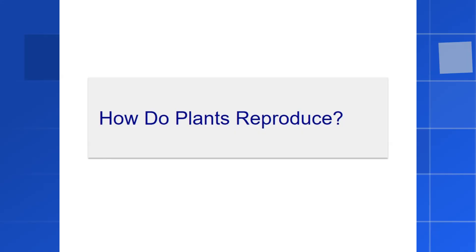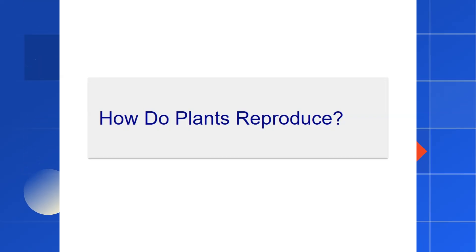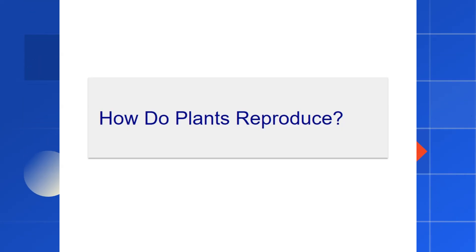Hello students, welcome to our lesson on a truly fascinating topic: how plants create new life. We see plants all around us, but have you ever wondered how they make new ones? Today, we're going to dive deep into the world of plant reproduction. We'll explore the two main methods they use — sexual and asexual reproduction — how flowers play a crucial role, how seeds are formed, and the incredible ways they travel to find a new home. Let's get started on this green adventure.